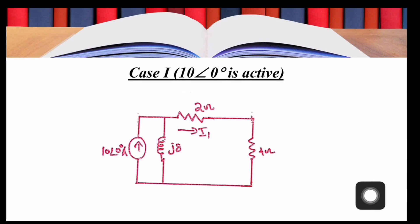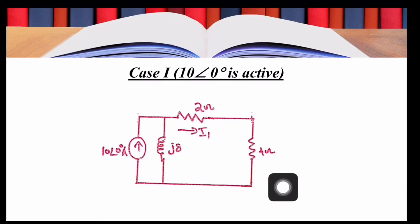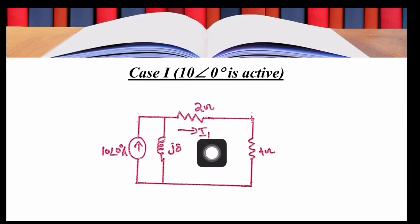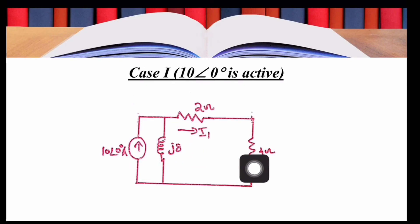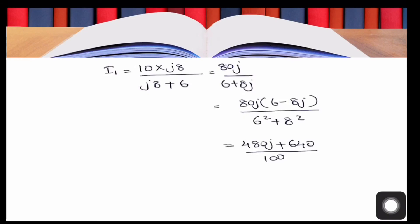At this point, the current 10∠0° is getting divided between two parallel paths, so we can use the current division rule to calculate i1. According to the current division rule, i1 = 10∠0° × j8 / (j8 + 2 + 4), that is i1 = 10 × j8 / (j8 + 6). This expression can be reduced to 48j + 64.